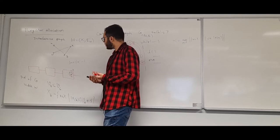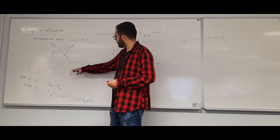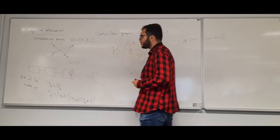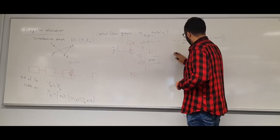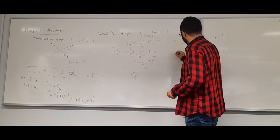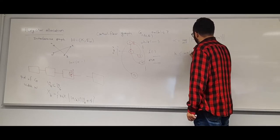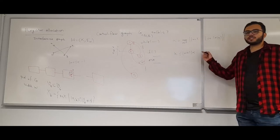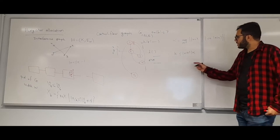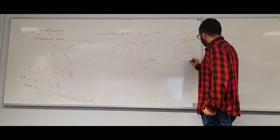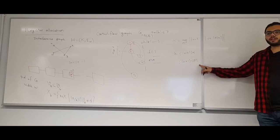The number of colors I need is at most (W+1)·alpha. Since alpha is a lower bound — we need at least alpha colors — this is at most (W+1) times the optimal number of colors. So this is a (W+1)-approximation algorithm.